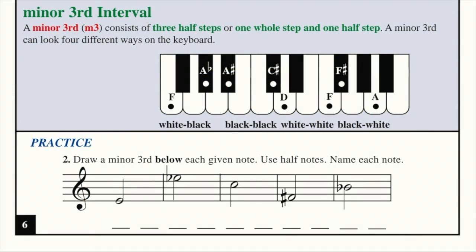Draw a minor third below each given note and we're going to use half notes and identify each note. Let's begin with the first example, E. Remember to count 3 and we're going to count down 3 because they want us to count below. Identify C and make it a half note and now we're going to analyze it.